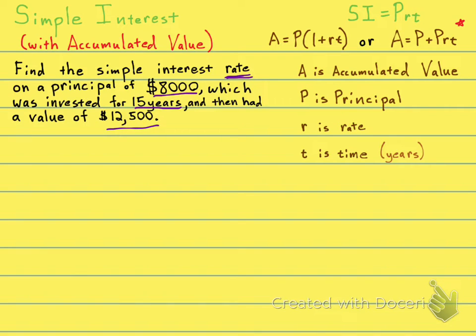So, let's list the things that we know. A is the accumulated value. That's the value at the end of the term, and in this case, how much do you have after your term? We have $12,500.